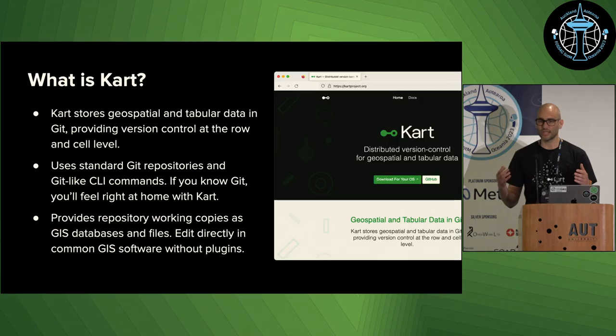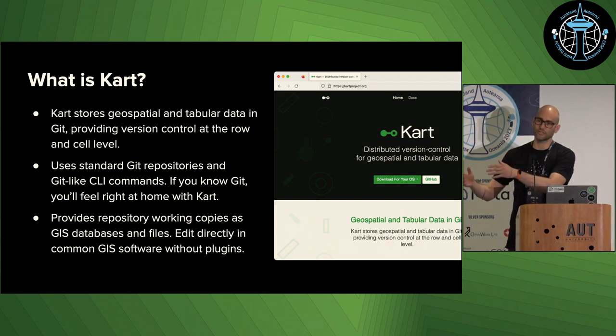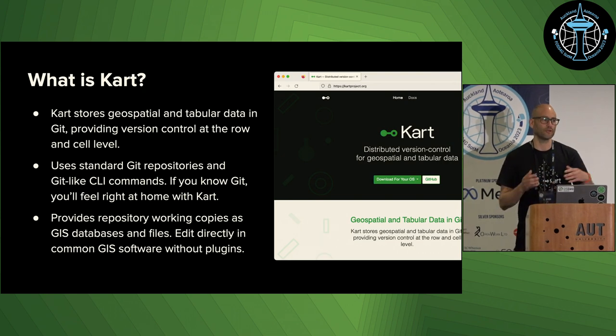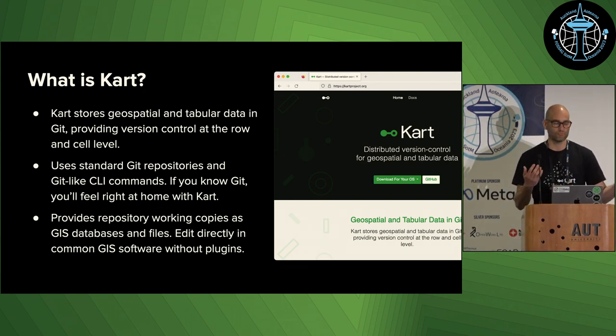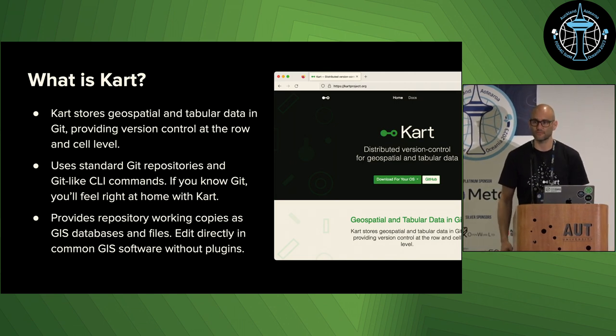Today we're presenting State of CART, which is Coordinates' open source software project for version control for geospatial data. Why did we build CART? It's simple — we needed it. Coordinates was in a unique position where we were delivering mature software engineering while also dealing with a lot of geospatial data management, and we could see a clear problem. The work we were doing in software engineering was afforded tools that just weren't available in the data management space. So there was a need and we went about solving it for ourselves.